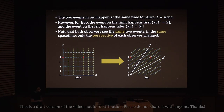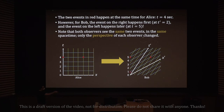The blue lines are lines of constant time according to Bob. So t-prime equals one means Bob looks at his watch and sees that one second has passed. All the points along this blue line are at t-prime equals one — according to Bob, all the points along this line are happening at the same time.